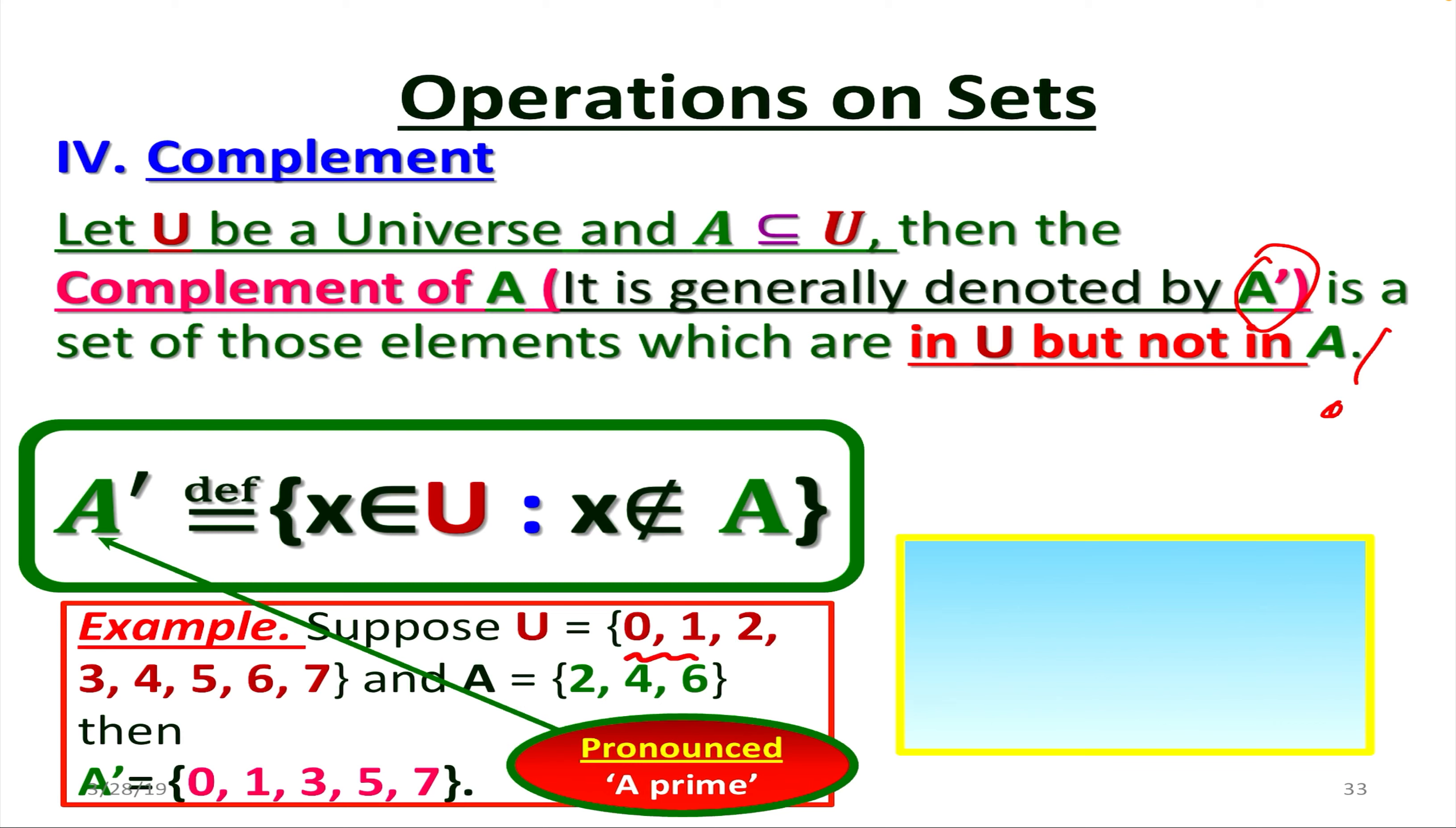So again, they're in set U, these elements, but they do not belong to set A. So in other words, it's going to be the difference between U and A. So 0, 1, the elements, it's going to be 3, also 5 from U, but these elements not from A.